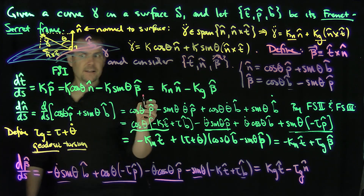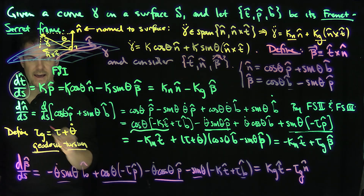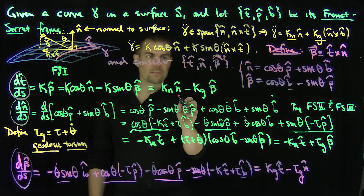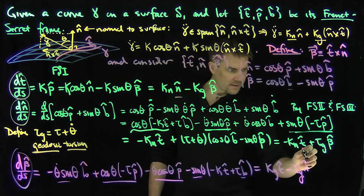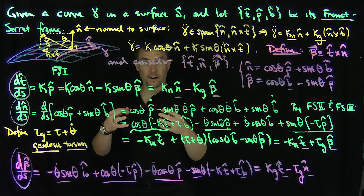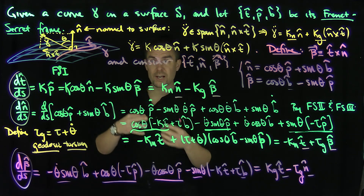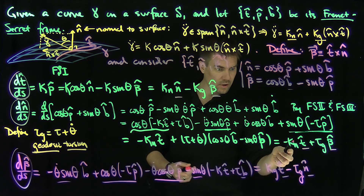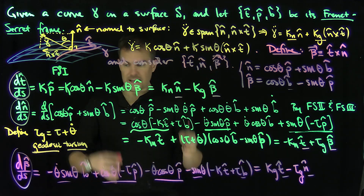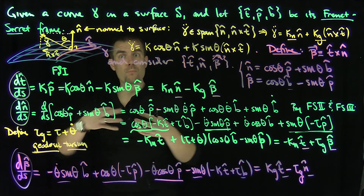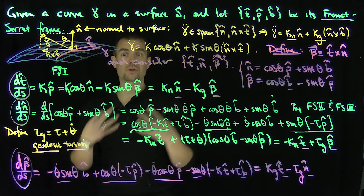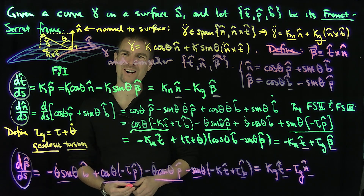So we have a closed system of first-order differential equations: dt/ds in terms of n-hat and beta-hat, dn/ds in terms of t-hat and beta-hat, and d(beta-hat)/ds in terms of t-hat and n-hat — expressed via the normal curvature, geodesic curvature, and geodesic torsion. If we can solve these equations, we find a moving frame tracking a curve along a surface. This is the surface analog of the Frenet-Serret equations. Thank you very much.